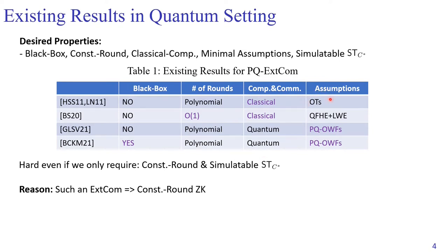Moreover, the first construction is based on assumptions as strong as oblivious transfers. The second construction needs algebraic assumptions. In particular, it requires the existence of fully homomorphic encryption for quantum circuits, as well as the LWE assumption. So it looks like the current state-of-the-art is not satisfactory.